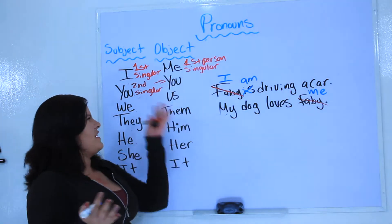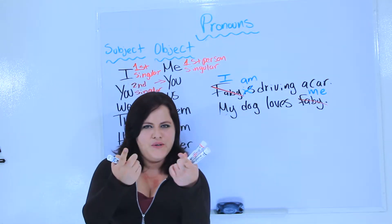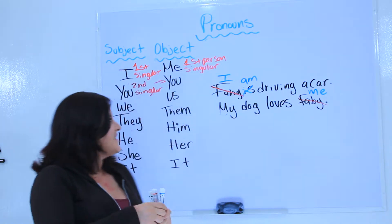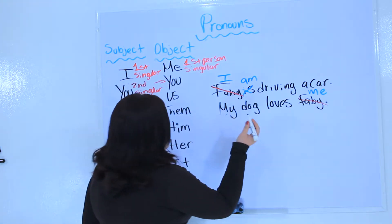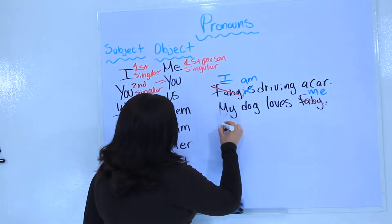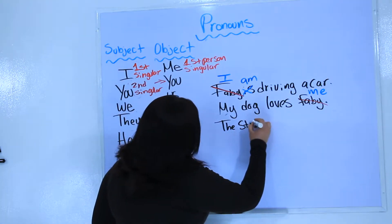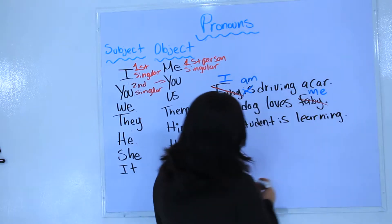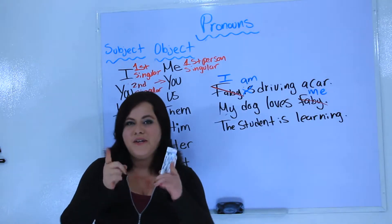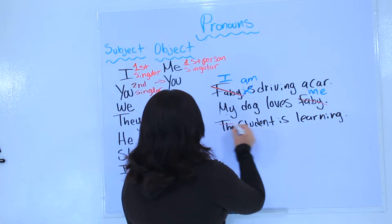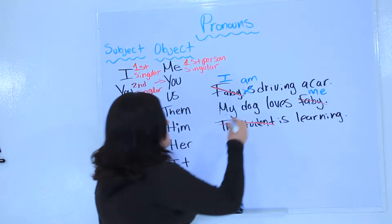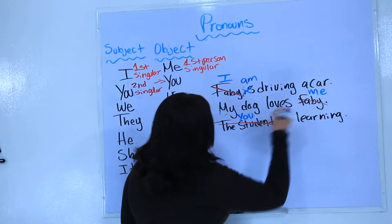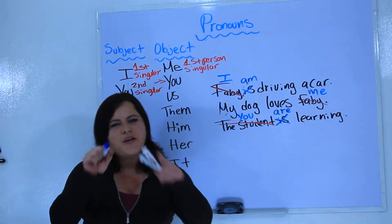So what does second person mean? Well, if there is another person in front of me — for example, you watching this video now — I would say you. You rock. You're cool. That is you, second person singular. For example, the student is learning. Who is the student? You. You are the student. So we could easily take this away and use you instead. You are learning. Not is — you are learning now.